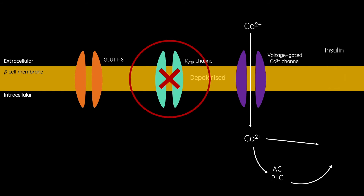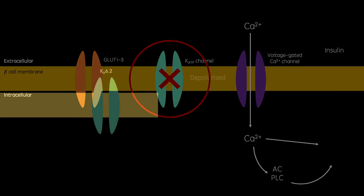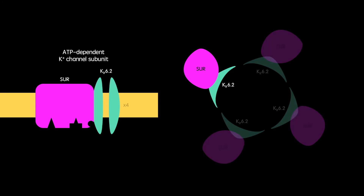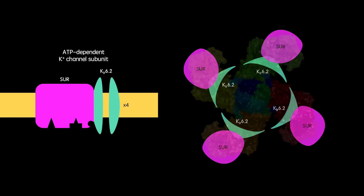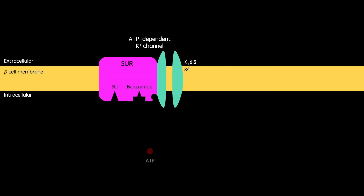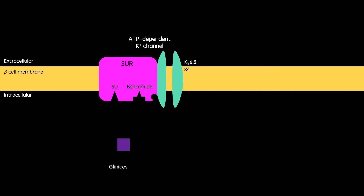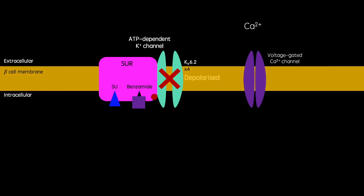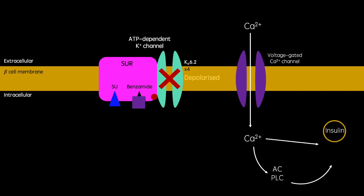Looking more closely at these ATP-dependent potassium channels, they consist of four KIR 6.2 channels and four sulfonylurea receptors. The sulfonylurea receptor can bind ATP, sulfonylureas, and glinides, any of which causes the channel's pores to close. As discussed before, this causes the beta cell to depolarize, opening voltage-gated calcium channels, which mediates the exocytotic release of insulin.